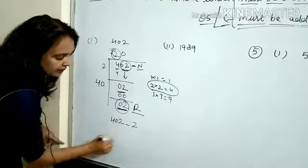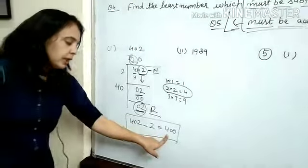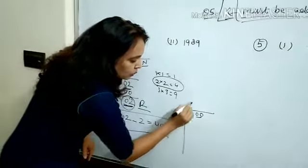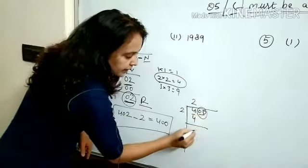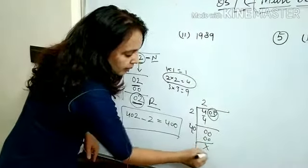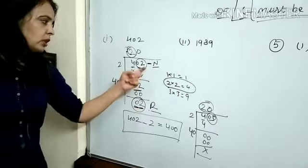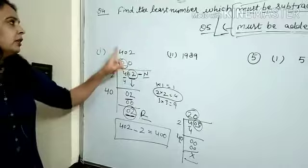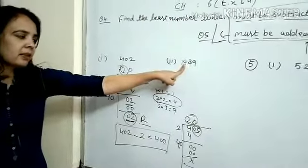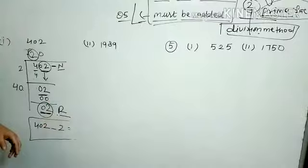The remainder is 2. To make 402 a perfect square, subtract 2 from 402: 402 − 2 = 400. Check: is 400 a perfect square? Using the division method on 400 — pair बनाओ, bring down, double the quotient to 4, remainder is 0. So 400 is a perfect square of 20. The remainder from the original number is what you subtract to get the perfect square.